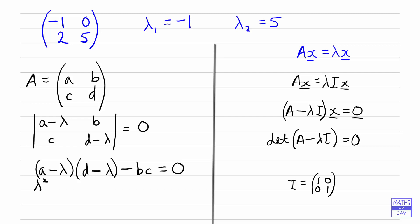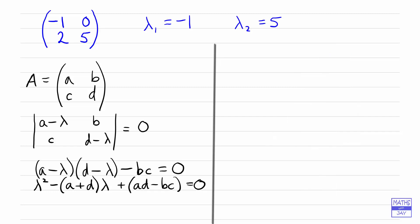Working out that determinant: (a minus lambda)(d minus lambda) minus bc equals 0. Expanding gives lambda squared minus (a plus d) times lambda plus (ad minus bc) equals 0. Note that a plus d is the trace of the matrix A, and ad minus bc is the determinant of A. You may be used to seeing this written as the characteristic equation.